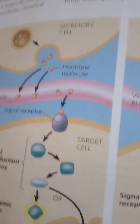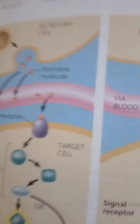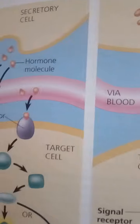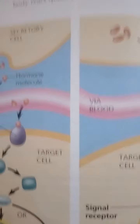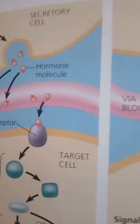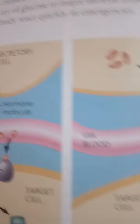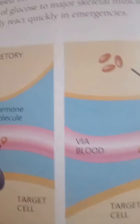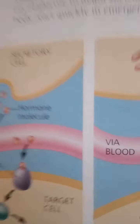Depending on the hormone and target cell, the response may be the activation of an enzyme, a change in the uptake or secretion of specific molecules, or rearrangement of the cytoskeleton. Signal transduction from some cell surface receptors activates proteins in the cytoplasm that then move into the nucleus and directly or indirectly regulate the transcription of specific genes.